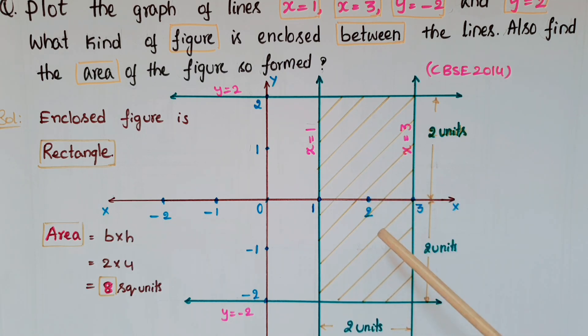Now find the area of this rectangle. Here the length is 4 units and breadth is 2 units, so the area is 2 into 4, that is 8 square units.